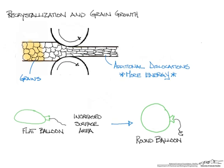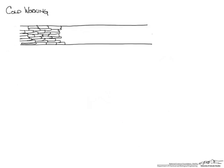Our original drawing of a piece of material being rolled is representative of what happens during a process called cold working. So right after cold working, our grains have typically become elongated. This picture represents right after cold working — you have elongated grains. During this time, you can expect that your material strength has gone up, but you can also anticipate a decrease in your ductility.